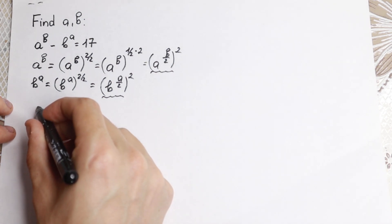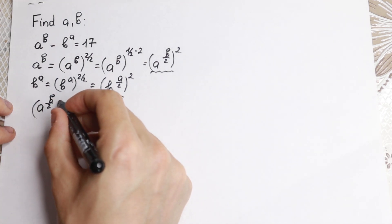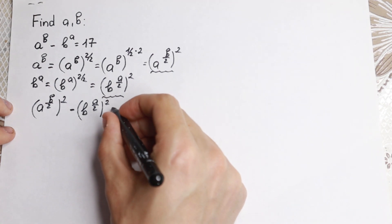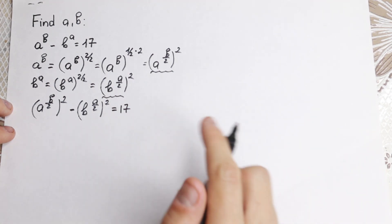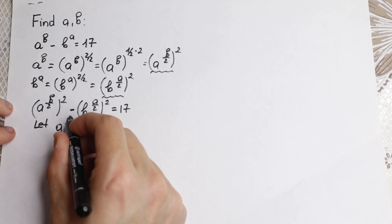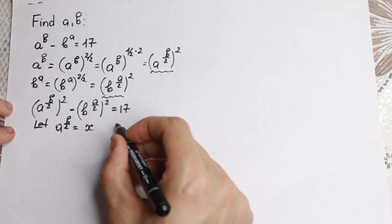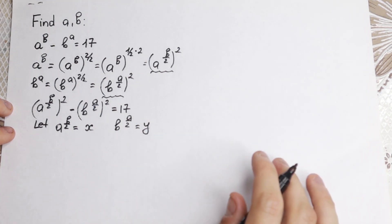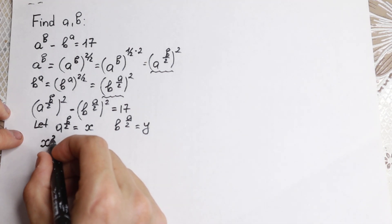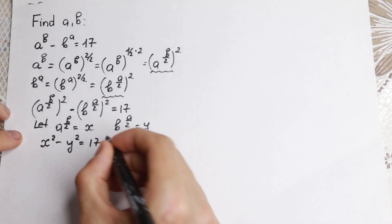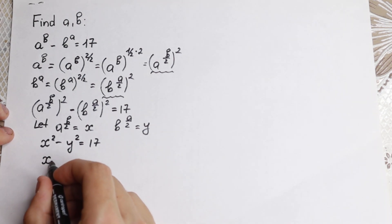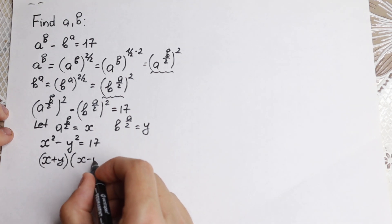As a result, our equation becomes: a to the power b over 2, all squared, minus b to the power a over 2, all squared, equals 17. Now we can use a substitution. Let a to the power b over 2 equal x, and b to the power a over 2 equal y. So we have x squared minus y squared equals 17. We can apply the difference of squares identity to write this as x plus y times x minus y equals 17.